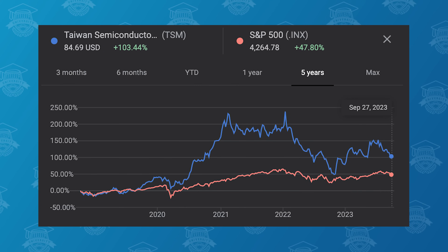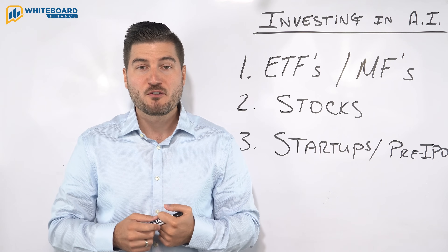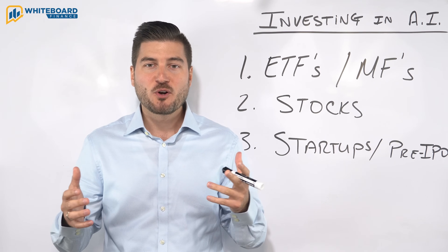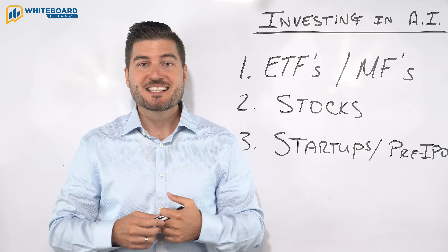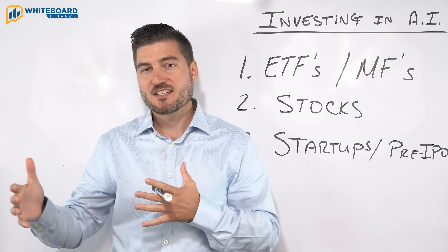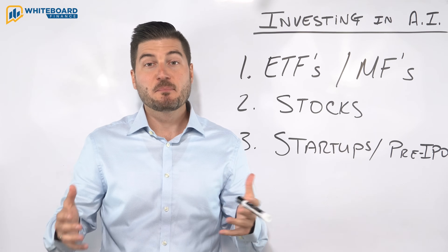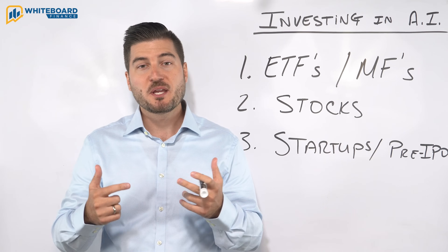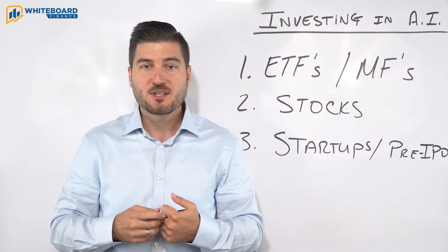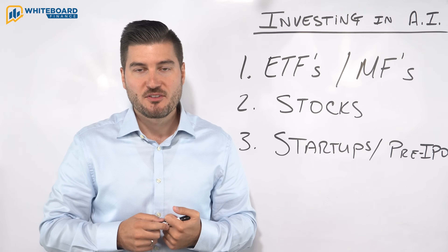And finally, we have Taiwan Semiconductor Manufacturing, ticker symbol TSM. TSM is basically the world's largest chip maker and another leading competitor in chip manufacturing for artificial intelligence. As AI grows, the need for robust computing is going to grow with it. This is like investing in the companies that put the chips in the Dell, using that as an example. TSM is a mature company that also makes chips for non-AI computer applications, so this may actually be a less risky play than others.